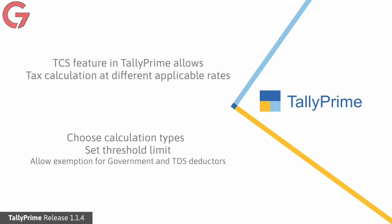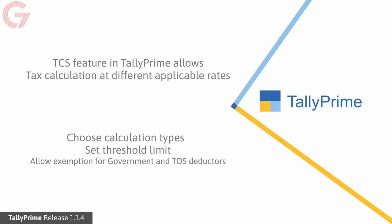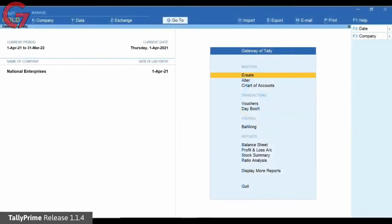Its implementation is simple, covers all nature of goods of TCS, enables tax calculation at different applicable rates, and also enables you to choose tax calculation on actual or realisation methods. To start implementing TCS, you have to enable the feature.